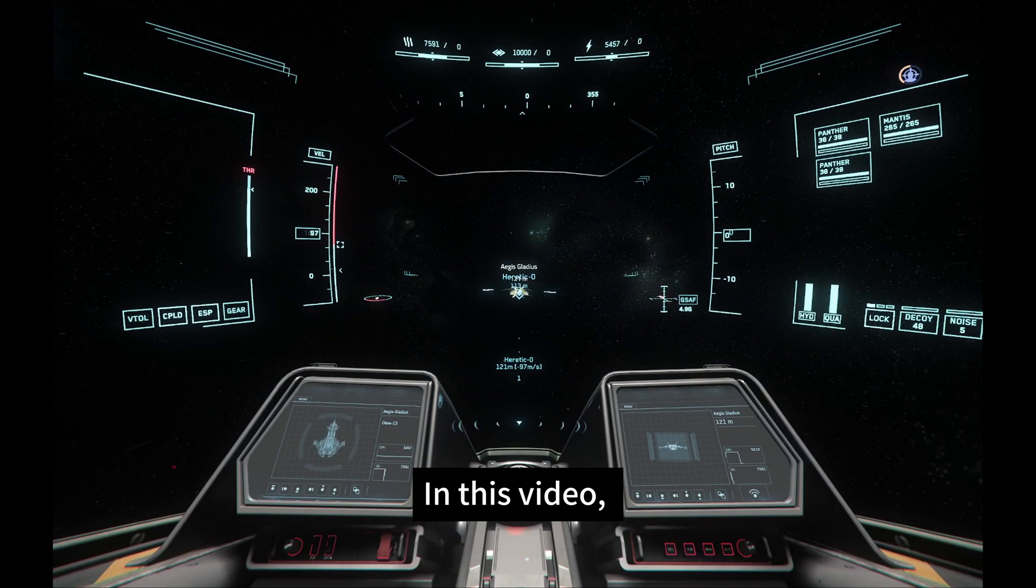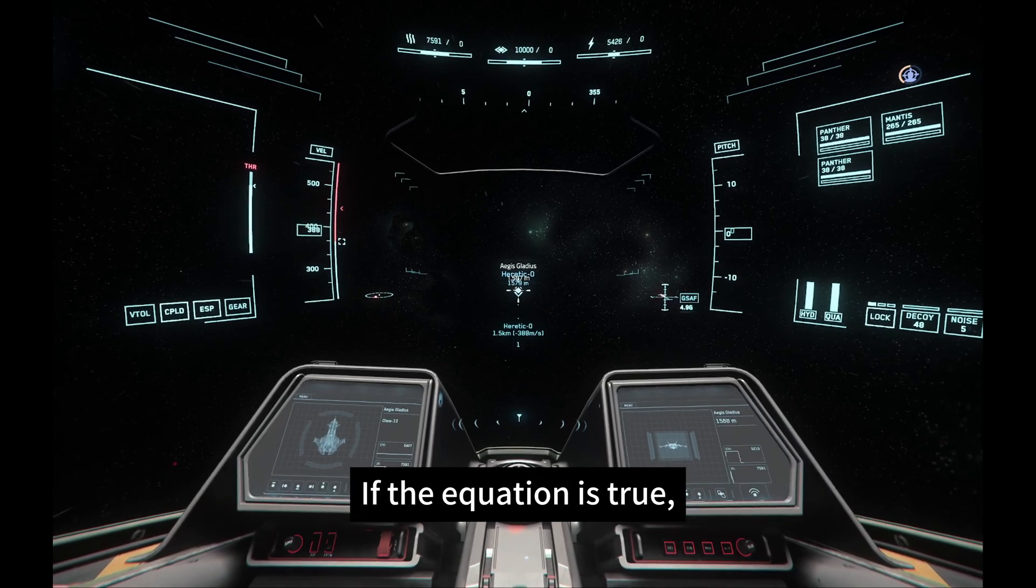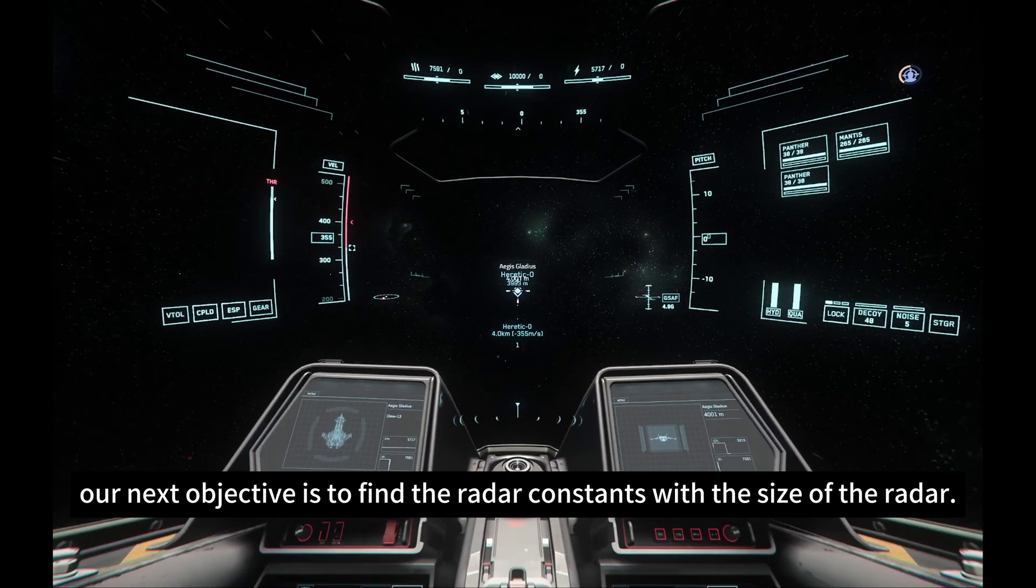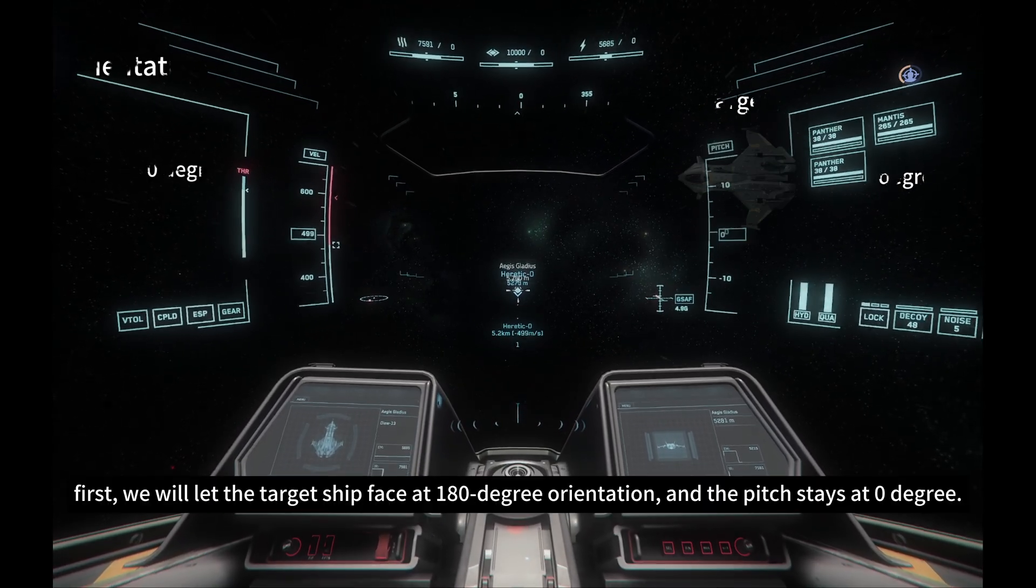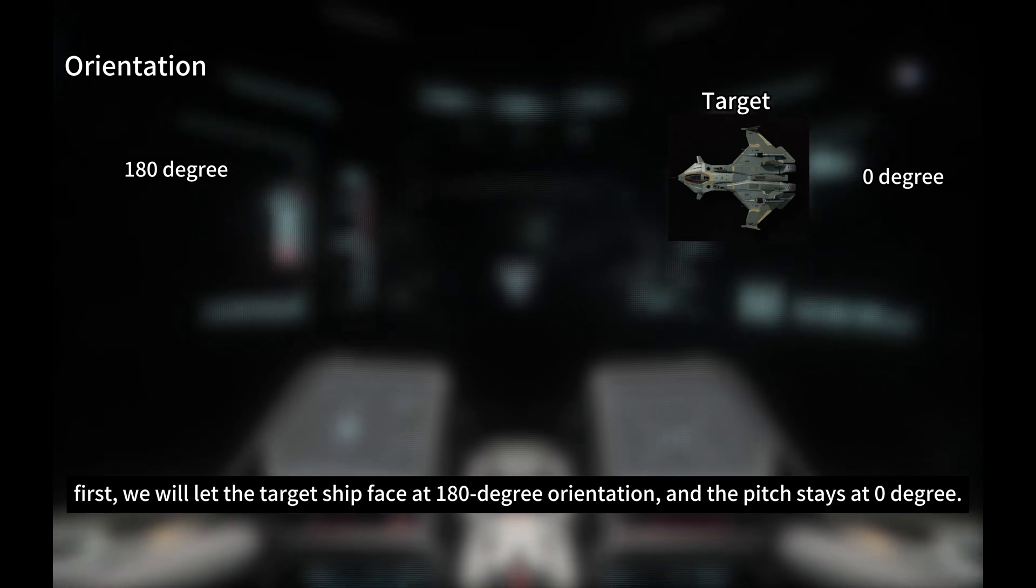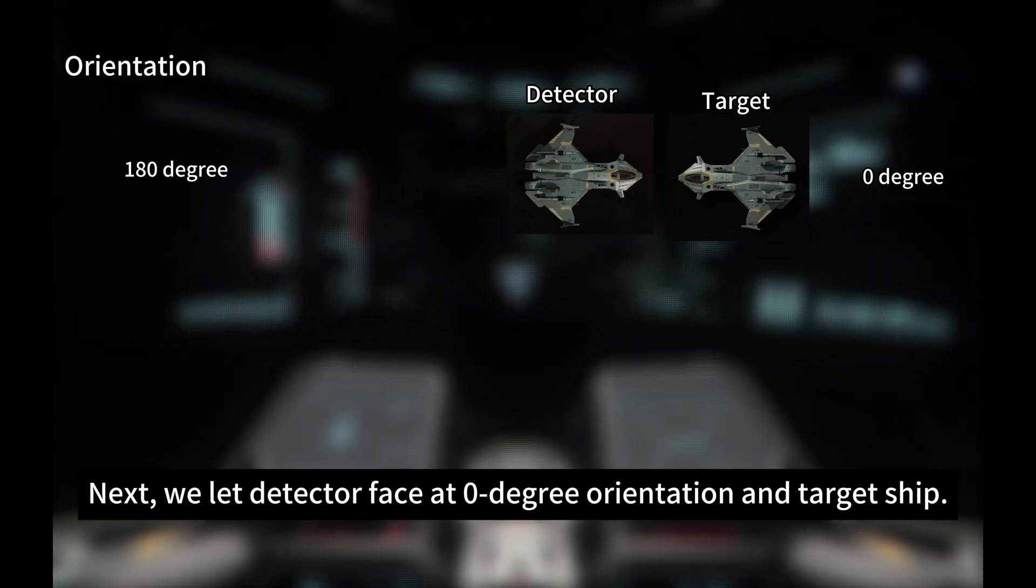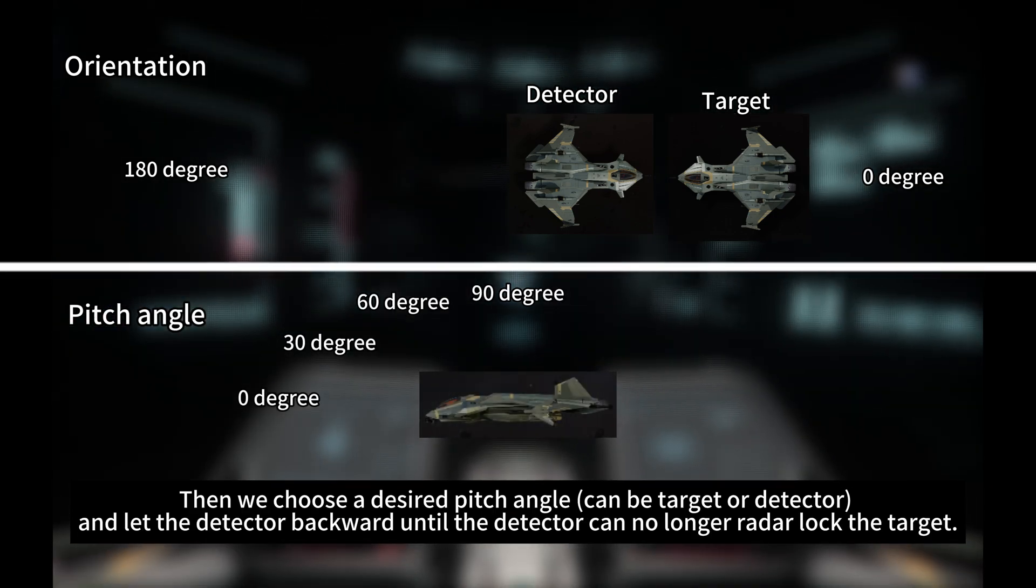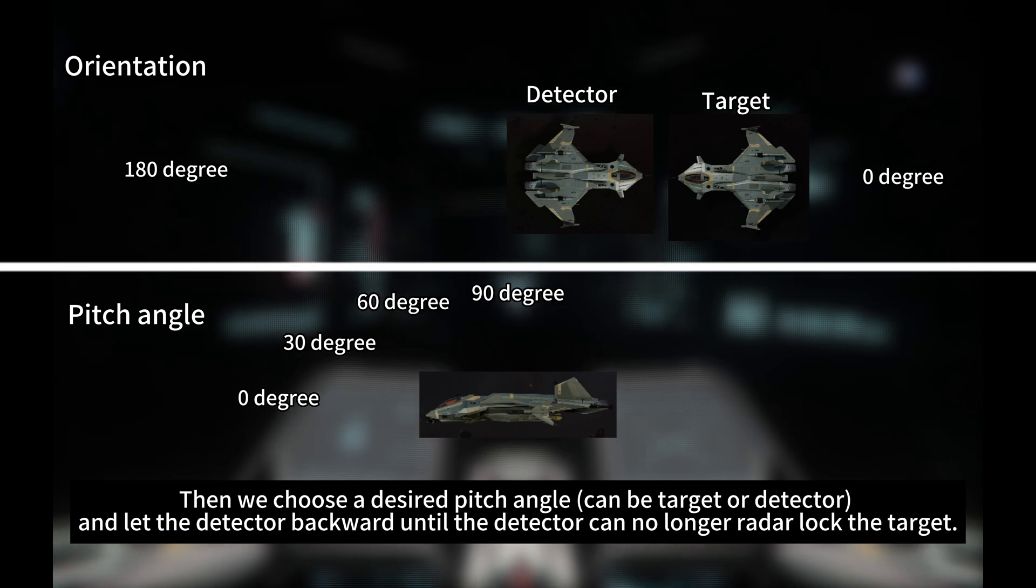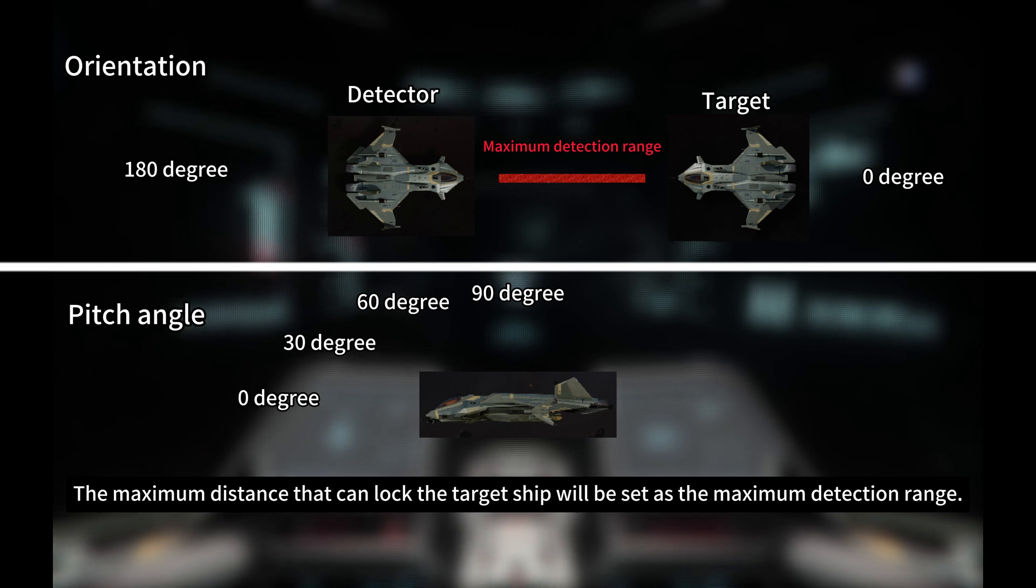In this video, our first objective is to confirm whether the detection range equation is true. If the equation is true, our next objective is to find the radar constants with the size of the radar. Our test method is simple. First, we will let the target ship face at 180 degree orientation and the pitch state at 0 degree. Next, we let the detector face at 0 degree orientation and the target ship. Then, we choose a desired pitch angle and let the detector back away until the detector can no longer radar lock the target. The maximum distance that can lock the target ship will be set as the maximum detection range.